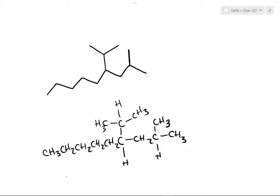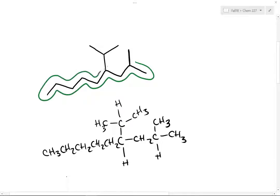Let's practice naming alkanes with complex substituents. Here I'm giving you an alkane. Let's find the longest chain: 1, 2, 3, 4, 5, 6, 7, 8, 9. Nine carbons is the longest chain, so we're going to name this as a nonane.